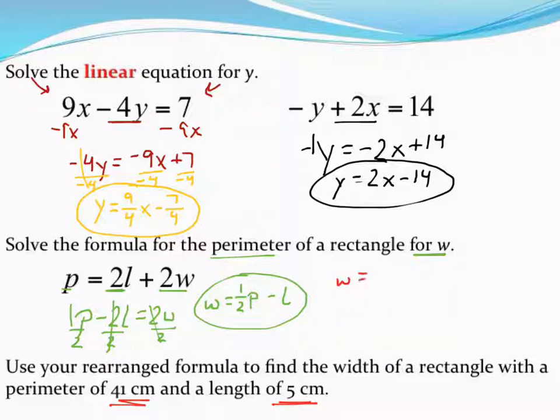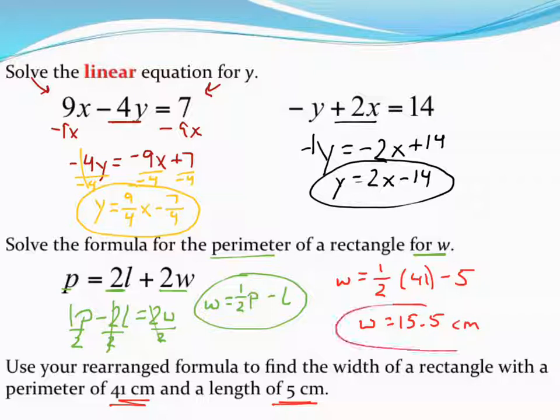So I'll have w equals 1 half times the perimeter is 1 half times 41. And then according to my equation, I'm going to subtract 5 from that. But when I do the work on that, I end up with a final width of 15.5 and then include a label. It looks like we're in centimeters. So a width of 15.5 centimeters.